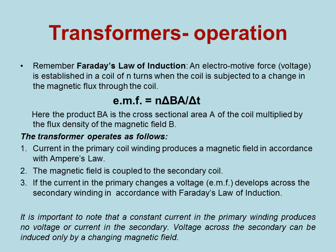Remember Faraday's law of induction. An electromotive force or voltage is established in a coil when the coil is subjected to a change in the magnetic flux of the coil. The EMF is equal to N, the number of turns, times the rate of change of the product of the magnetic flux density times the area of the coil per unit time. Here the product BA is the cross-sectional area of the coil multiplied by the flux density B of the magnetic field.